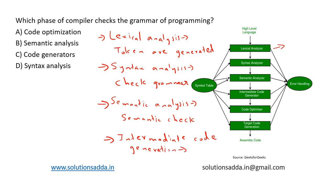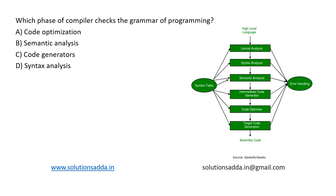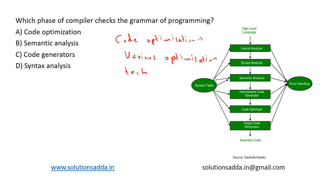Then we move on to the next phase, that is code optimization. In code optimization, we apply various optimization techniques in order to improve the performance of the generated machine code.